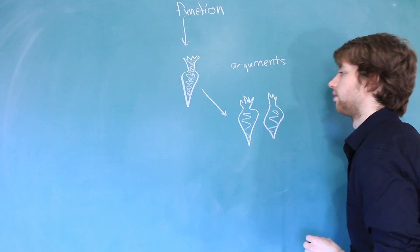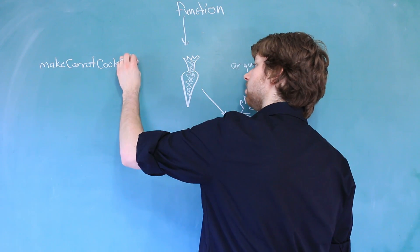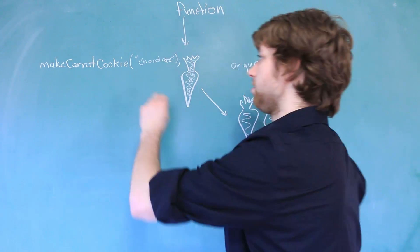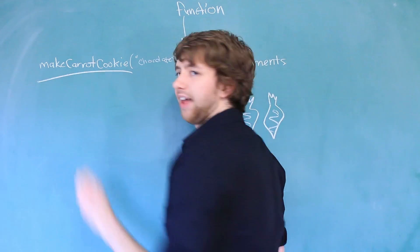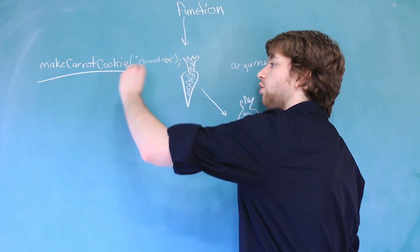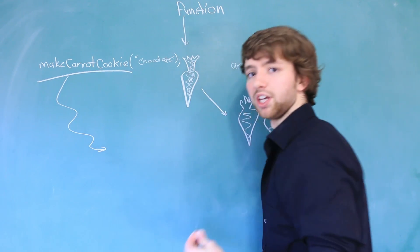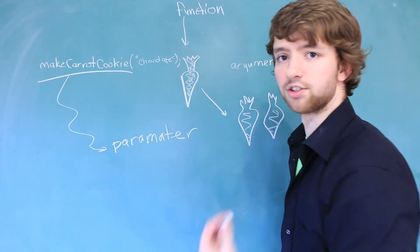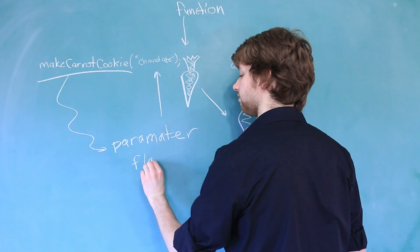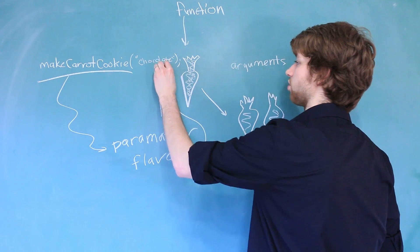If you had to convert this into computer science terms, it would look something like this. Make carrot cookie. And then we could pass in here, like a string for example, chocolate. Where this function is defined, that's what we'll get into farther in the series when we talk about creating our own functions. But essentially, if you go track down where this function is created, you'll find something called a parameter that describes what you're passing in here. So we would say something like flavor. So flavor is going to be a variable, and the value of flavor is going to be chocolate.